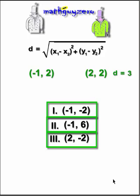Just a little sidebar here. The numbers three, four, and five are what we call a Pythagorean triplet. And they're commonly used in these types of problems. But that's it. MGZ out.